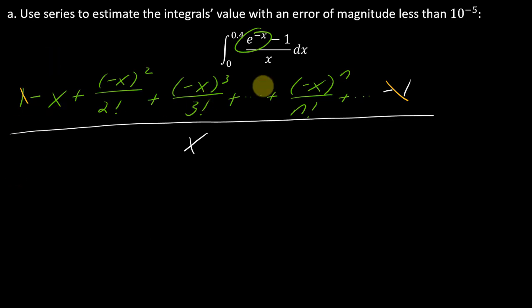Now I want to simplify all of this. What I notice is that the ones drop out. And then all the rest of this stuff can be divided by x. This will become negative 1 plus, this is x squared over this x, so this just becomes x over 2 factorial. This next one will be negative, and now this will be x squared over 3 factorial.